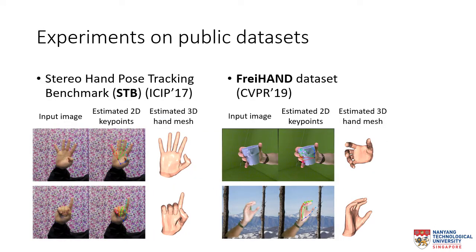We conduct our experiment on two public datasets. The first dataset is the Stereo Hand Pose Tracking Benchmark, STB dataset, which only contains a single subject posing in the frontal pose. Whereas the recent FreiHand dataset contains much more challenging hand poses with object interactions and different numbers of subjects. The figure shows some qualitative results of our proposed method that can estimate both the 2D keypoints and the 3D hand mesh from an input color image.